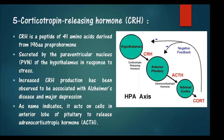The next hypothalamic hormone we are talking about is the corticotropin releasing hormone, also called CRH. CRH is a peptide of 41 amino acids derived from a 196 amino acid pre-pro hormone. The major function of CRH is that it activates the anterior pituitary to release adrenocorticotropic hormone (ACTH), which acts on the adrenal cortex to release cortisol. CRH is secreted by the paraventricular nucleus of the hypothalamus in response to stress conditions.